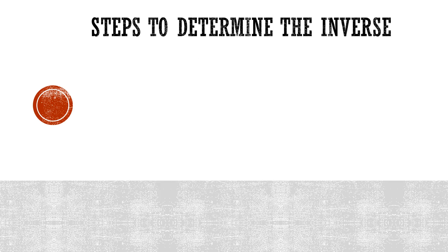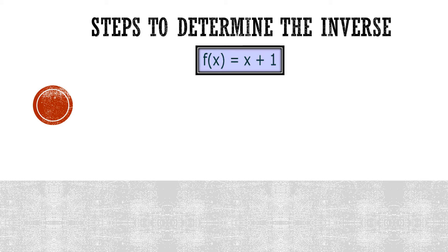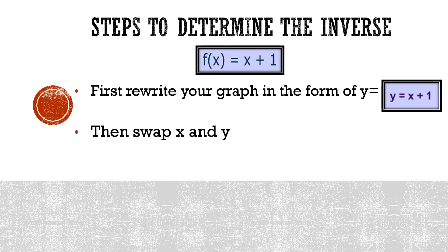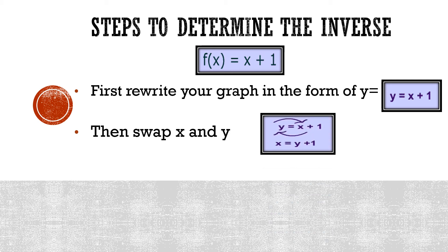Now let us look at the steps to determine the inverse of a function. Let's take for instance we are given f of x equals x plus one. The first step is to rewrite the function in the form y equals x plus one. The second step is to swap x and y — where there is x we place y, and where there is y we replace with x. Our new equation becomes x equals y plus one.